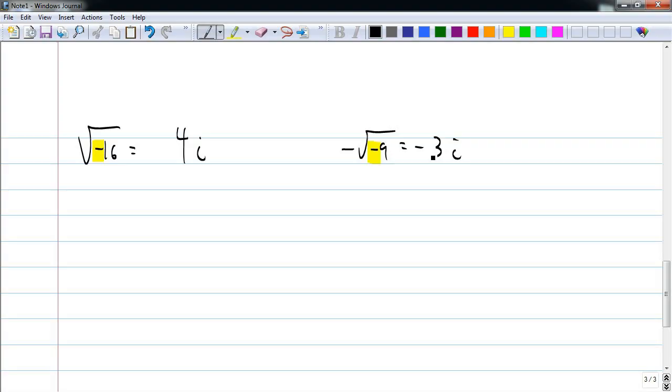So this is negative 3i. Now if I'm working with something that's not a perfect square, that's okay. Square root of negative 24. The negative comes out as i. And then I just work out square root of 24. 24 is 4 times 6. So this is going to be 2i radical 6.